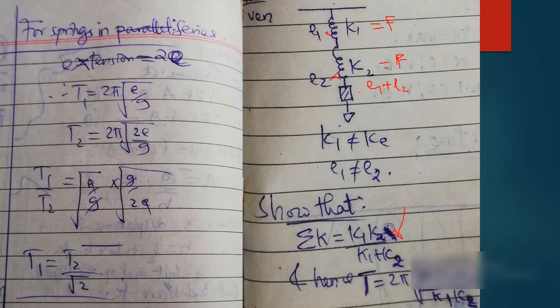Total extension is simply 2e. But what is e? From F equals ke, e equals F over k. So if we have e1 equals F over k1, and e2 equals F over k2. We have the total extension e equals F times the quantity 1 over k1 plus 1 over k2. This is, in other words, mathematically equal to F times k1 plus k2 over k1 times k2.